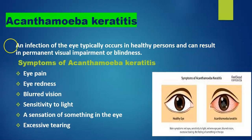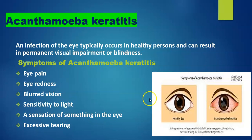The symptoms of Acanthamoeba keratitis include eye pain, redness, sensitivity to light, a sensation of something in the eye, and excessive tearing. Here we see a comparison: this is a healthy eye, and this is an Acanthamoeba keratitis eye — the infectious eye — with all the symptoms visible.